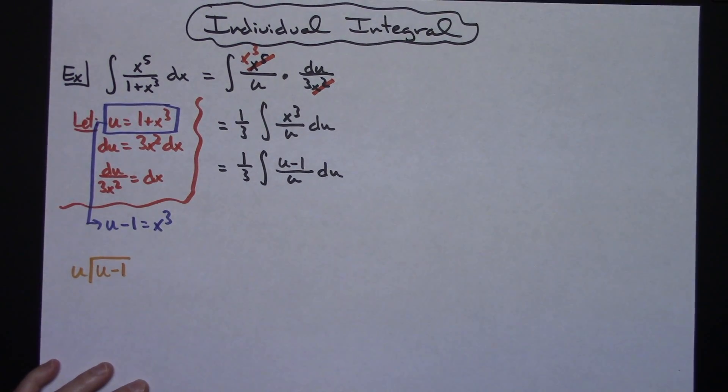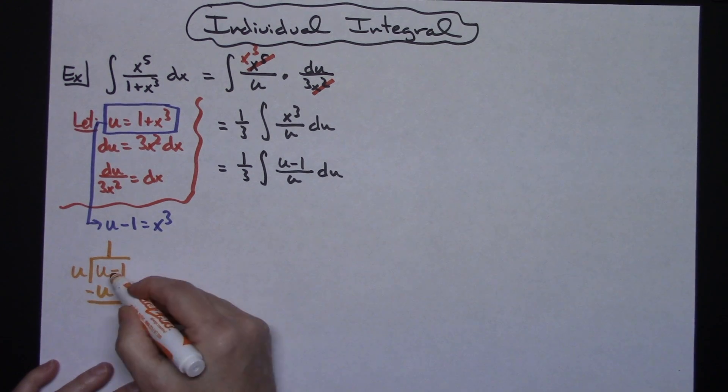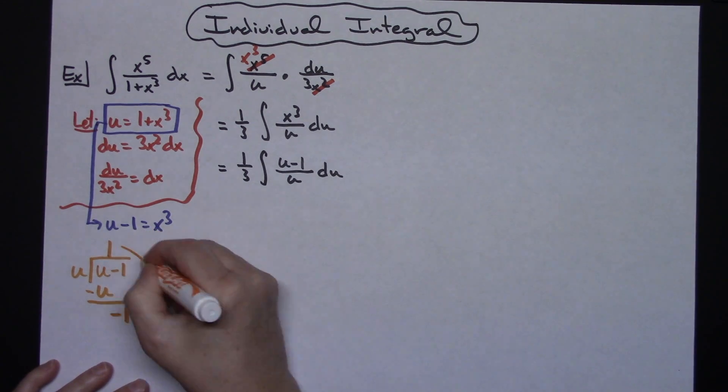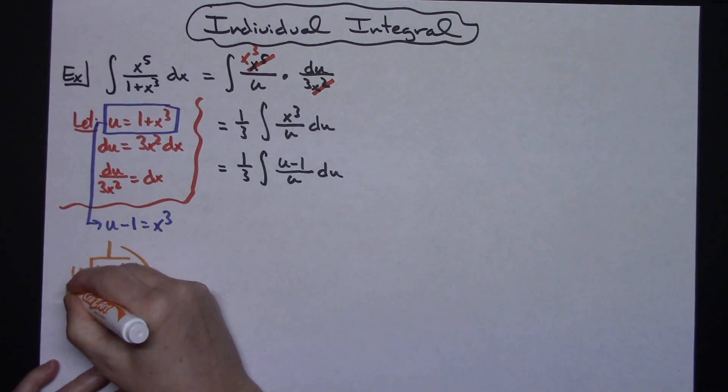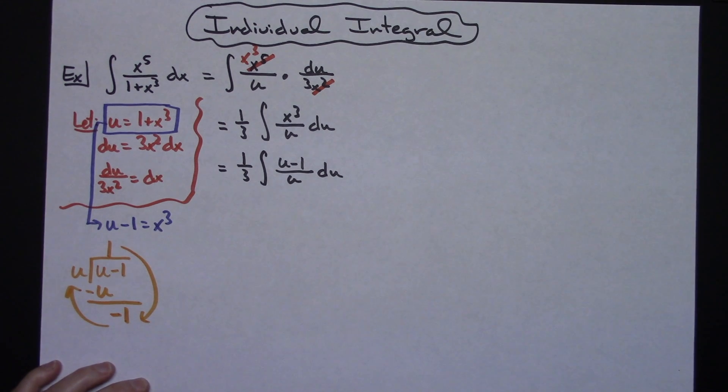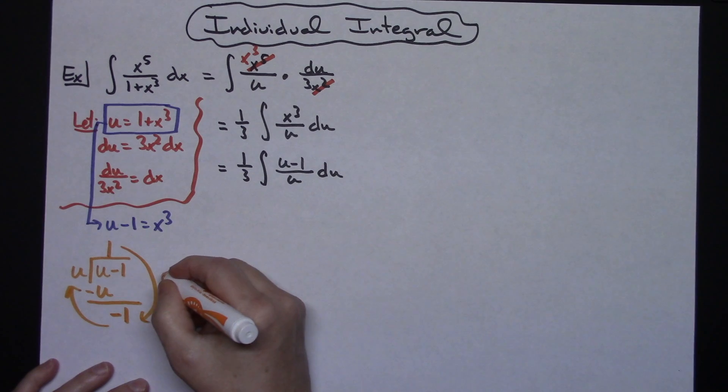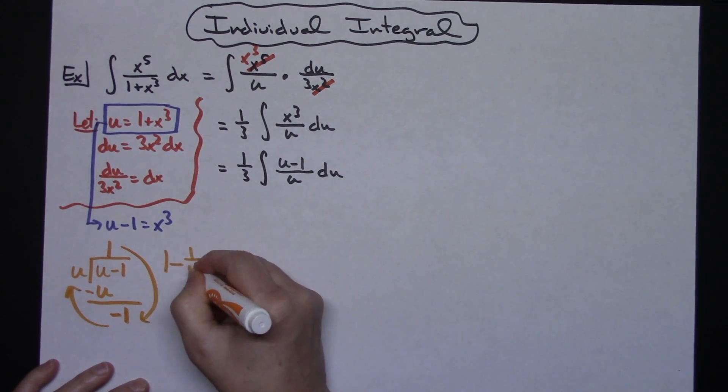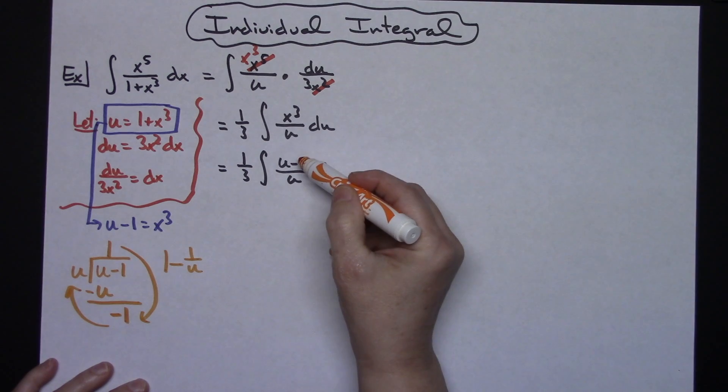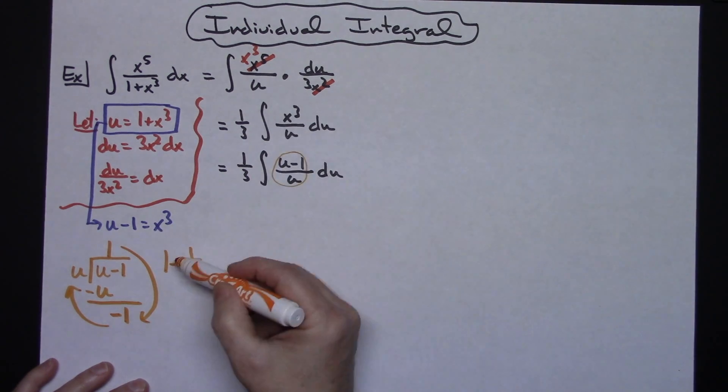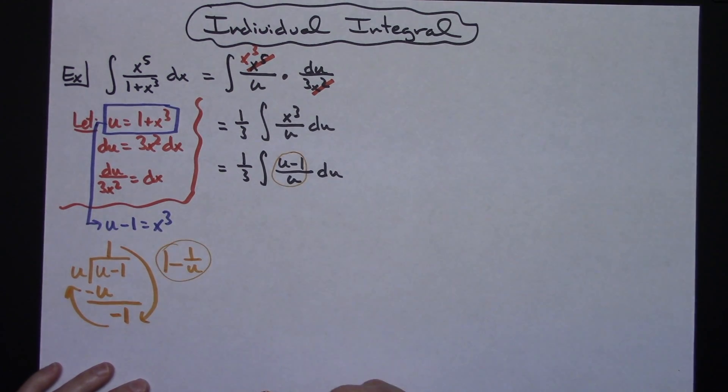I'm going to put u minus 1 on the inside of a long division box, I'm going to put u on the outside and I'm just going to divide. U goes into u one time. 1 times u is u. U minus u that's going to fall out. Negative 1 minus 0 is going to give me a negative 1, so I'm going to have a remainder there. If I go counterclockwise around that long division, this right here I can write as 1 minus 1 over u. So that tells me that this expression is equal to 1 minus 1 over u.